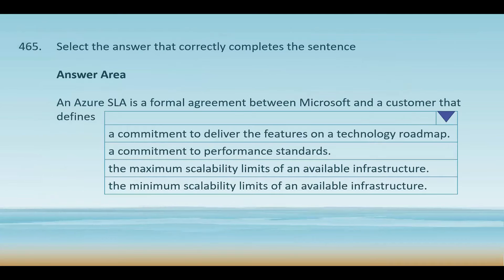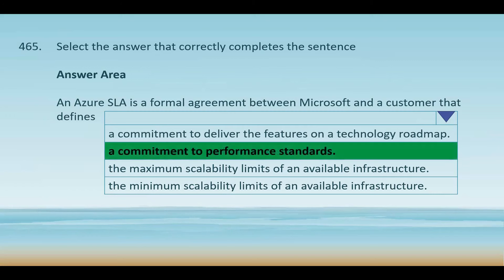You are presented with a fill-in-the-blanks question. An Azure SLA is a formal agreement between Microsoft and a customer that defines — your options are: a commitment to deliver features on a technology roadmap, a commitment to performance standards, the maximum scalability limits of available infrastructure, or the minimum scalability limits of available infrastructure. The correct answer is a commitment to performance standards. These standards typically cover metrics like uptime, availability, and connectivity for Azure services. The SLA outlines what Microsoft promises regarding service availability and the compensation customers may receive if the service does not meet those standards.